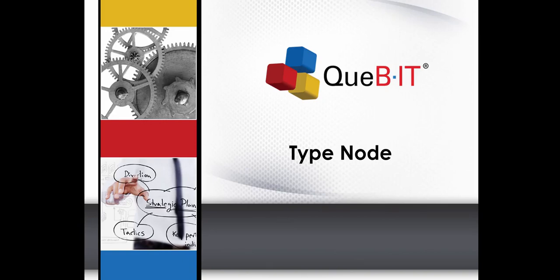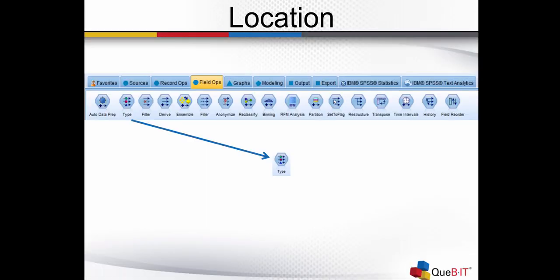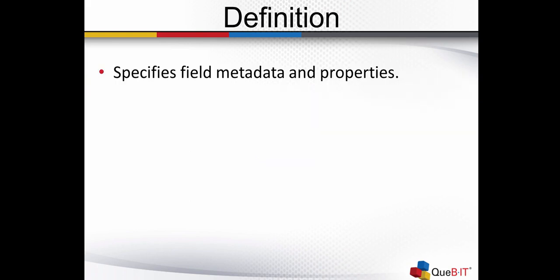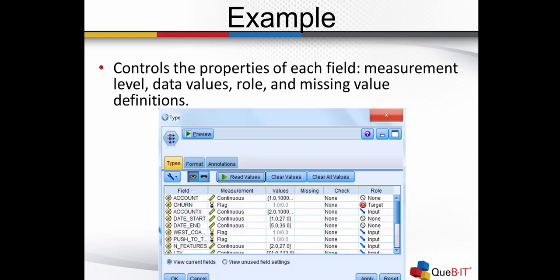Let's talk about the type node. The type node is located in the field ops palette. This node allows you to specify metadata and data properties. The type node controls the properties of each field — it controls the level of measurement, the data values, the role, and the missing value definitions.